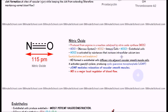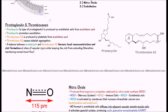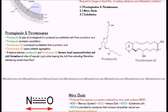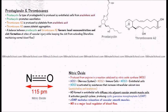NOS3 is activated by substances that increase intracellular calcium ions — such as acetylcholine and bradykinin — which are neurotransmitters. Nitric oxide causes vasodilation: it forms in the endothelial cells and diffuses out into the smooth muscle, where it activates guanylyl cyclase. This produces cyclic GMP (cGMP), which causes relaxation of vascular smooth muscle, resulting in vasodilation that can redirect blood flow to the extremities or other regions of the body.